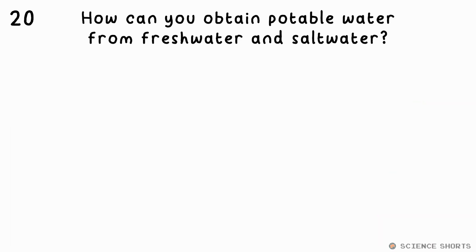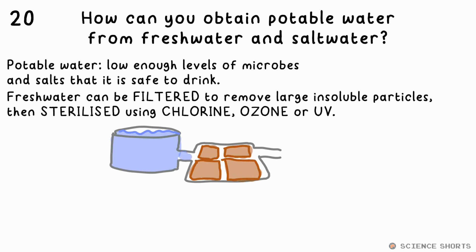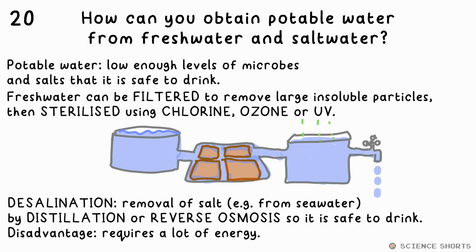Question 20. How is potable water made from fresh water and salt water? Fresh water can be filtered to remove large and soluble particles, then sterilised using chlorine, ozone, or UV. You must remove salt from salt water before it's safe to drink — this is desalination. You can use distillation or reverse osmosis to do this, though both require a lot of energy.